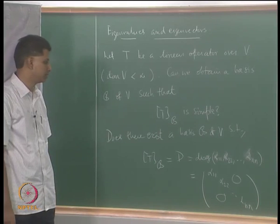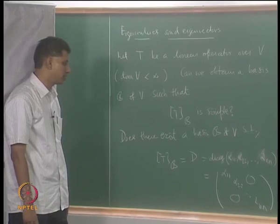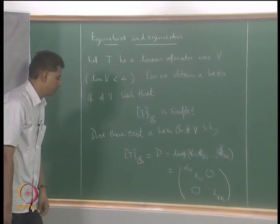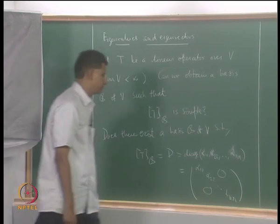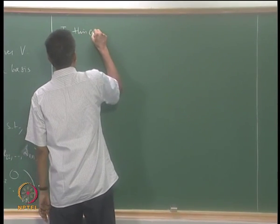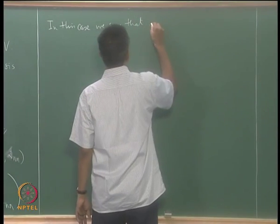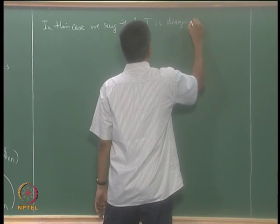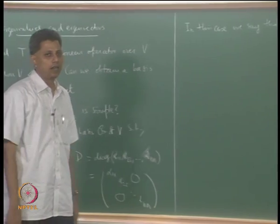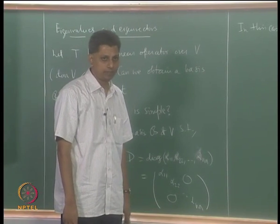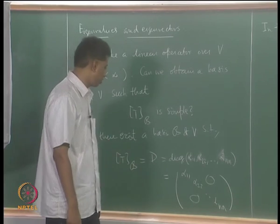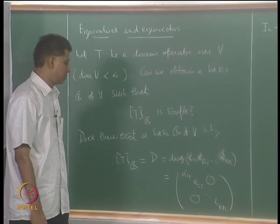What is the advantage of this, and what does it say about the transformation T? If a linear operator T has this property — that is, if the matrix of T relative to some basis is diagonal — then we say that T is diagonalizable. The question is: are all operators on finite dimensional vector spaces diagonalizable?